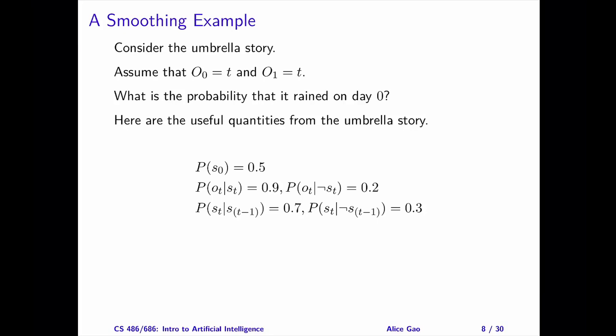Let's go through an example of calculating a smooth probability. Consider the umbrella story. Assume that two days have passed and the director carried an umbrella on both days. We want to calculate the probability that it rained on day 0.